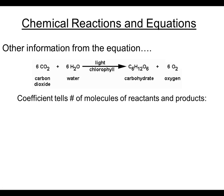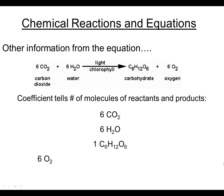Other information from the chemical equation comes from coefficients in front of chemical formulas, which tell us the number of molecules of reactants and products. In this equation, carbon dioxide has a coefficient of six molecules. There are also six molecules of water. Carbohydrate is a product—with no coefficient in front, there is only one molecule. And finally, there are also six molecules of oxygen.